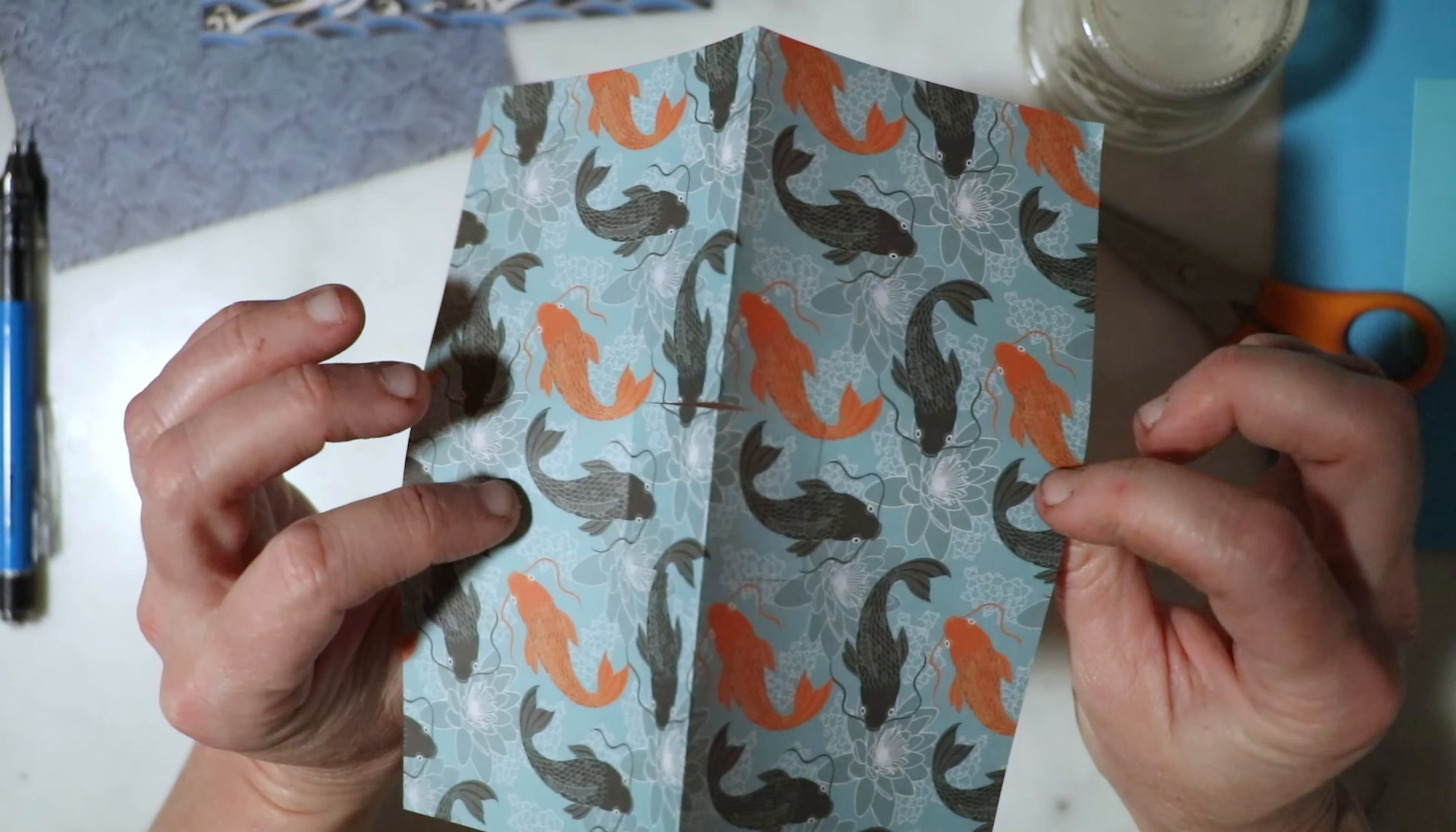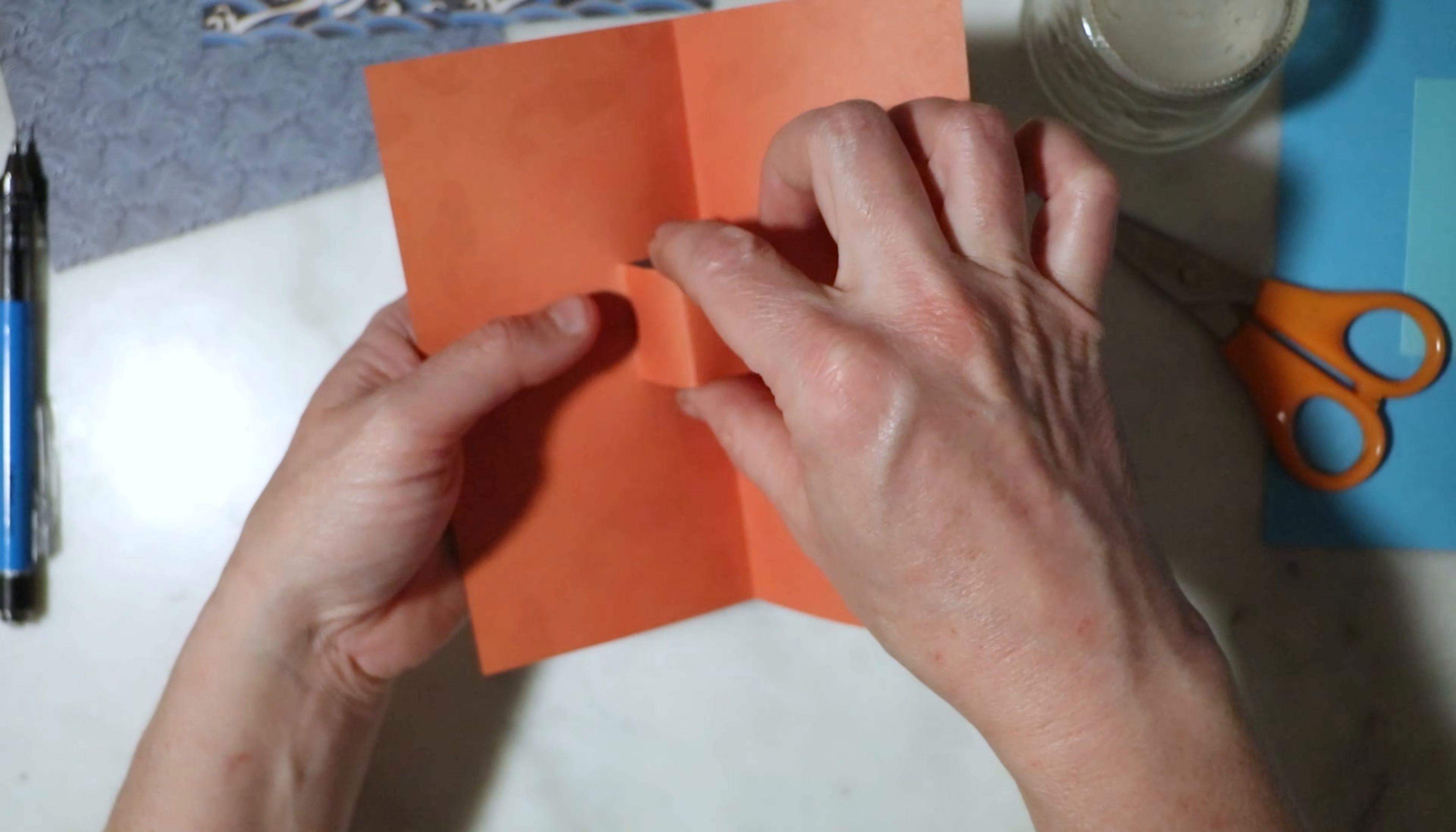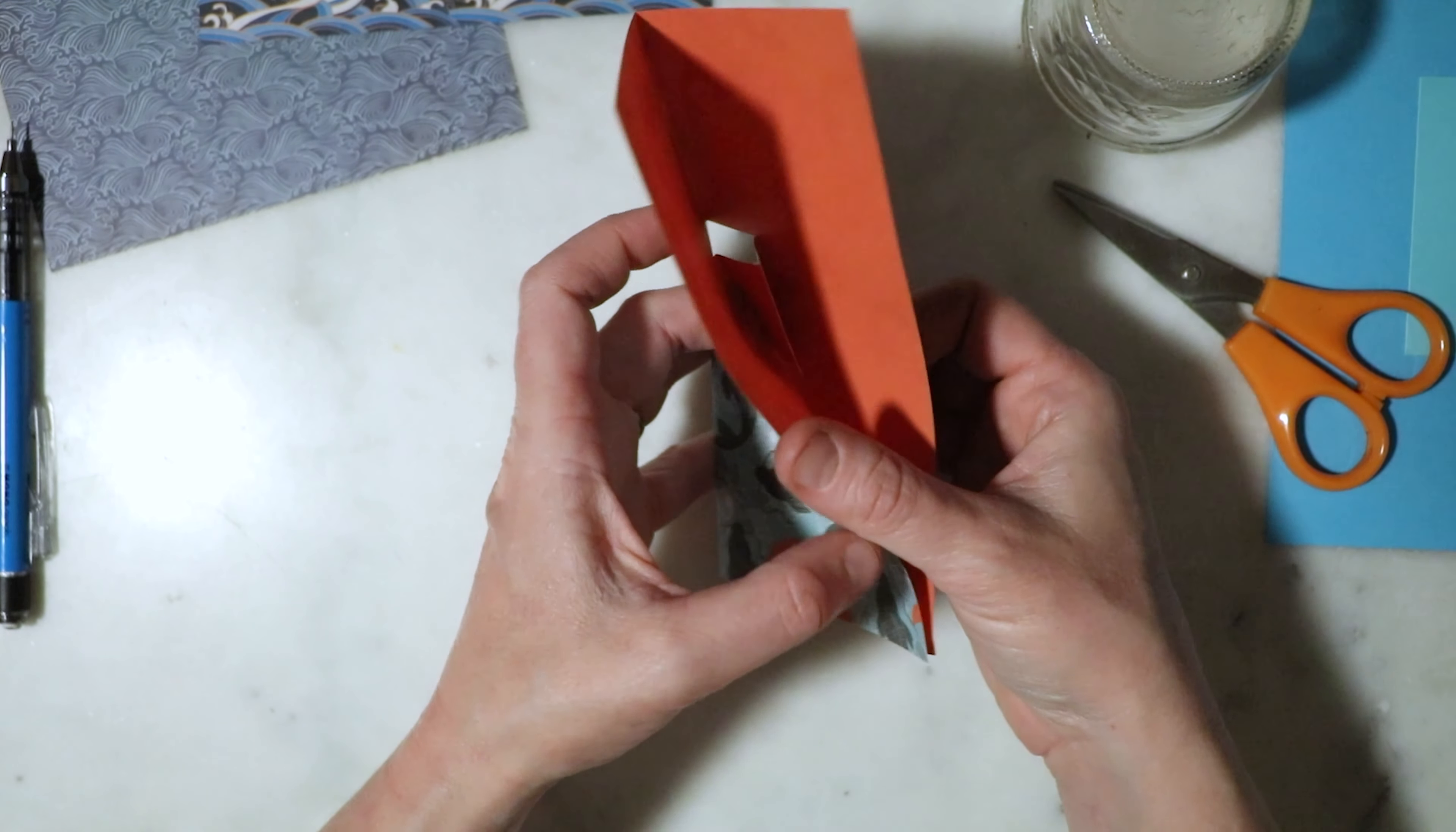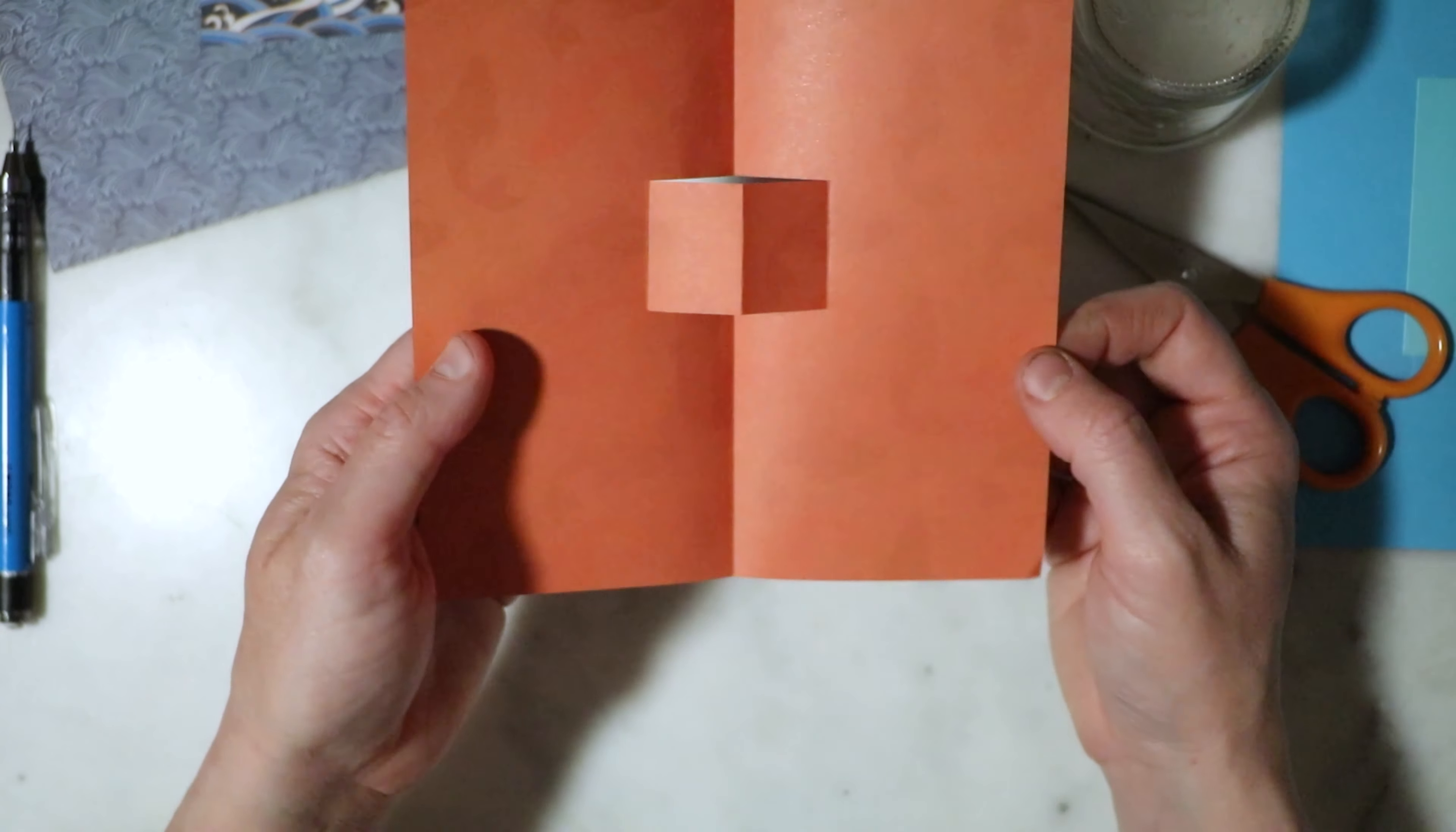We're going to open up our piece. Now we have the front side or the outside which is the fishes and the inside which is the orange. We're going to take the inside which is orange and just pop it through, and we're going to turn that fold inside out and it's going to make a square for us. Do you see that square? So now when you fold it and open it, that square is going to pop out and be three-dimensional - pop-up card. Boom, super easy, right?